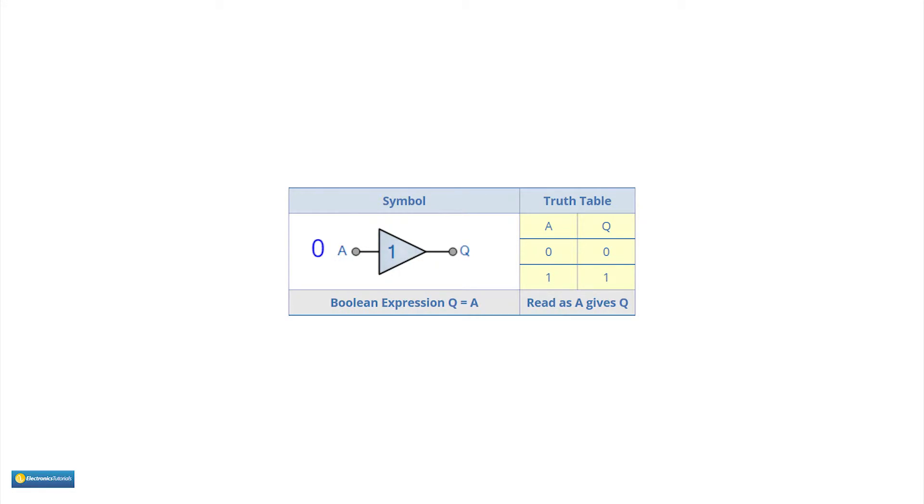This is the symbol of the simplest gate, the buffer. Here is what is called the truth table for the buffer. It shows that when the input is 0 the output is 0, and when the input is 1 the output is 1. This may not seem to be too useful, but is offered here for completeness.